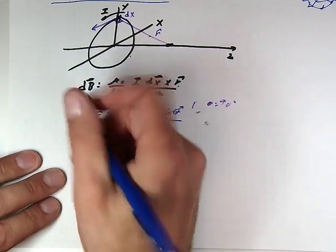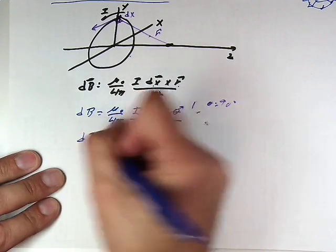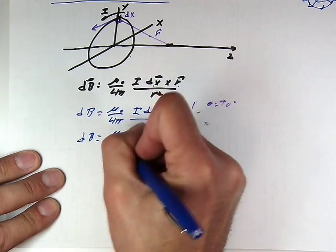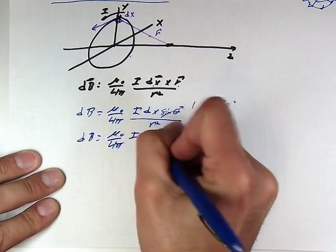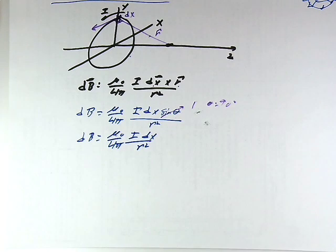So continue processing the Biot-Savart law. So then the db becomes mu naught over 4 pi i dx over r squared. So the sine theta just completely dropped out.